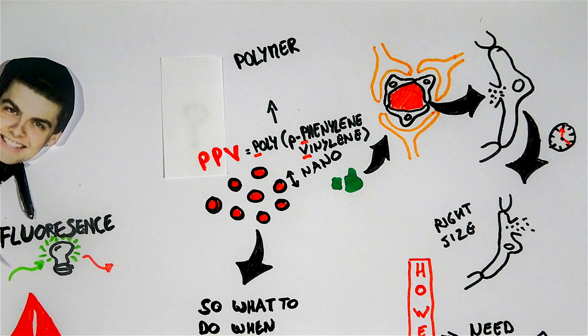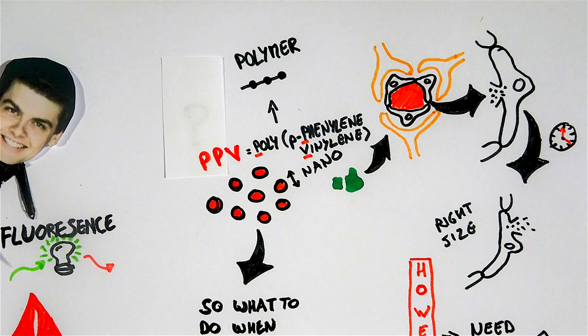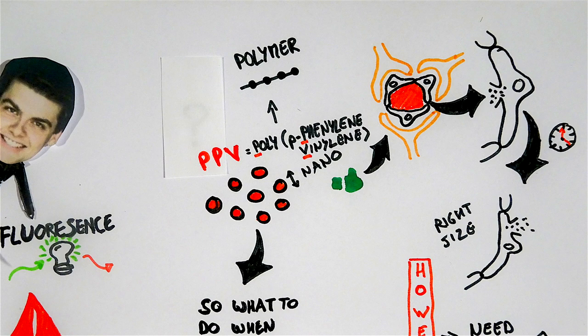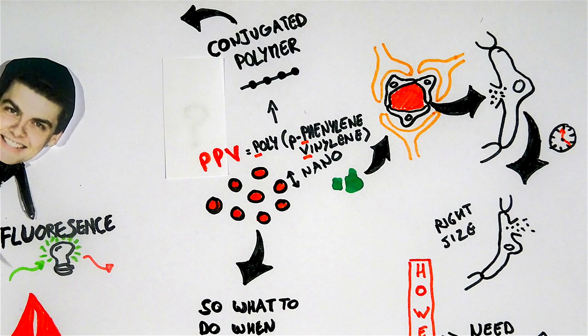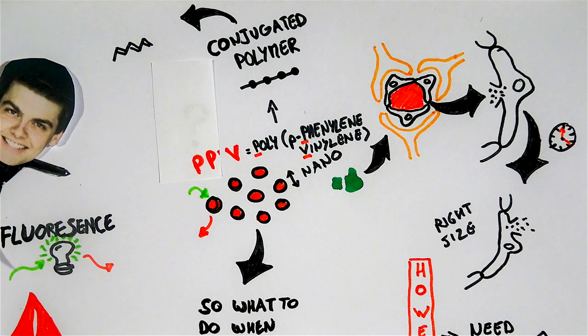And this is a polymer, which is a chain of single units attached to one another. More specifically, it's a conjugated polymer, which means that these single units, or the chain in its whole, has a special structure, which makes it fluorescent.